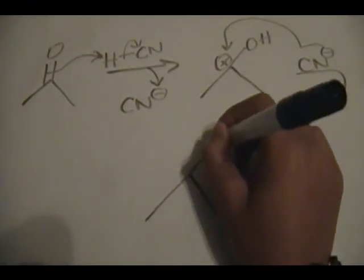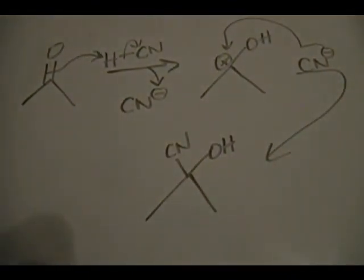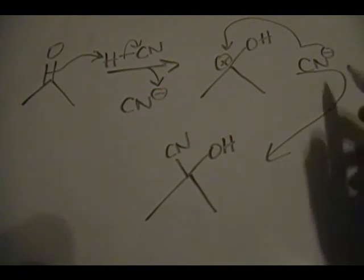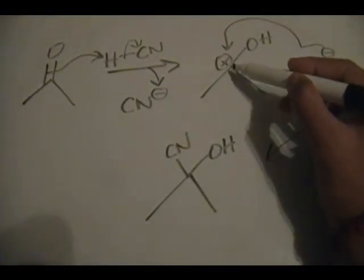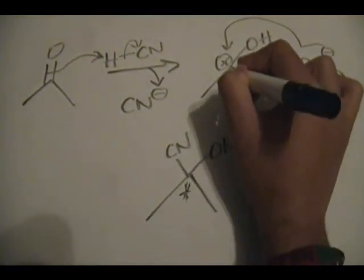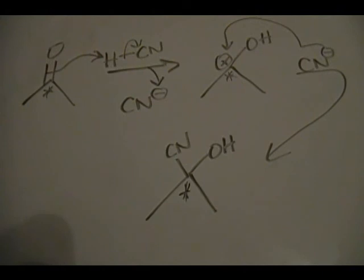In the second step, the CN minus generated from the first step attacks the carbon bearing that positive charge, and there's your product. So to recap: the pi electrons from the carbon-oxygen double bond attack the H of HCN; the bond shifts to give CN minus; that CN minus comes back to attack the former carbonyl carbon, which now has a positive charge. You get your cyanohydrin — an alcohol and a CN group attached to what was the carbonyl carbon.